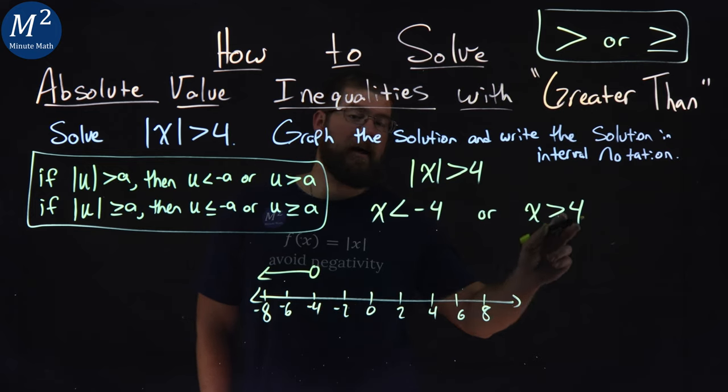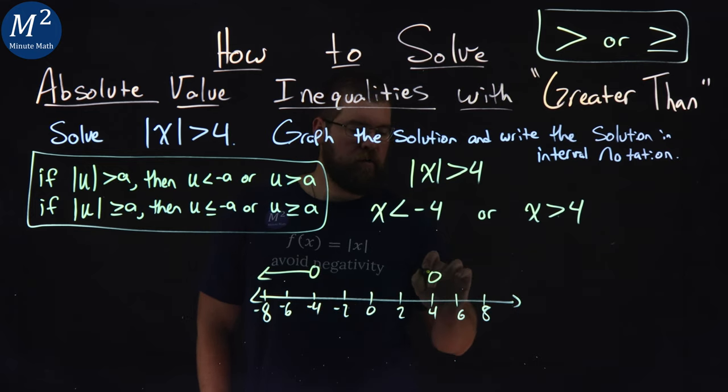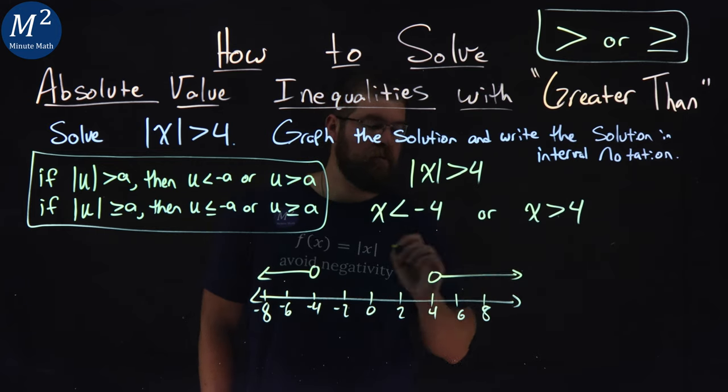Same thing with positive 4. x cannot equal positive 4, so we put an open circle here at positive 4. And x is greater than positive 4, so the arrow goes to the right.